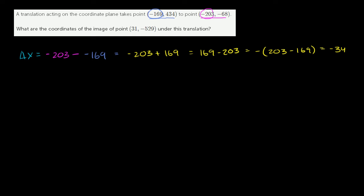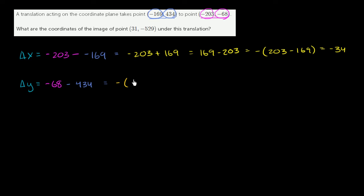Now let's think about our change in y. Our change in y: our ending point is negative 68 and our starting point is 434. So our ending point minus our starting point, minus 434, is going to be equal to the negative of 68 plus 434.